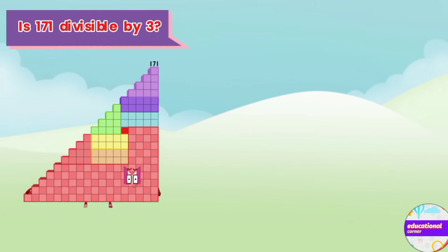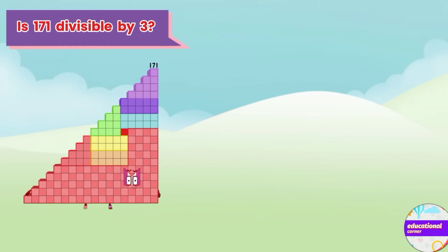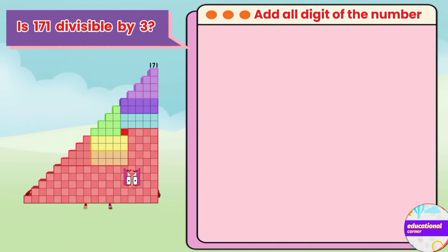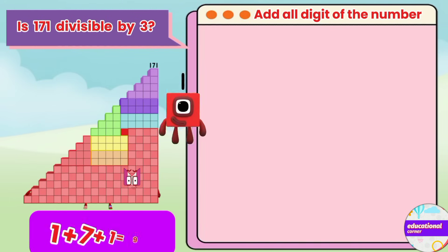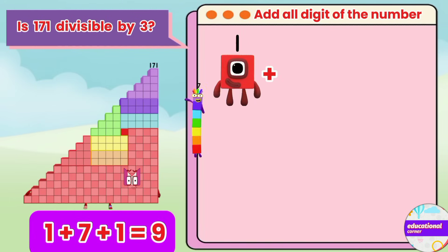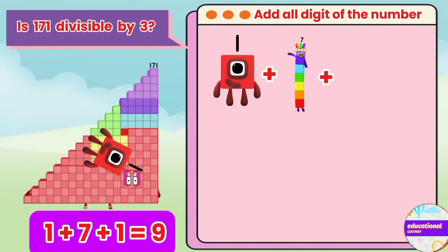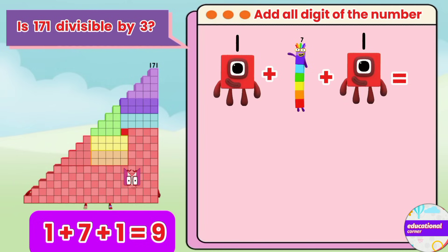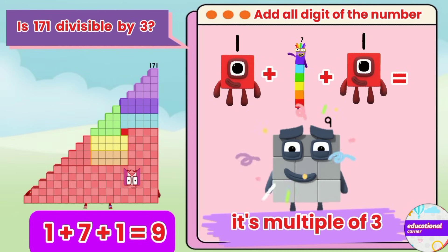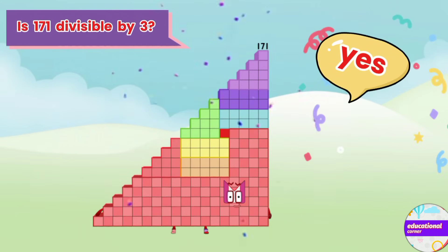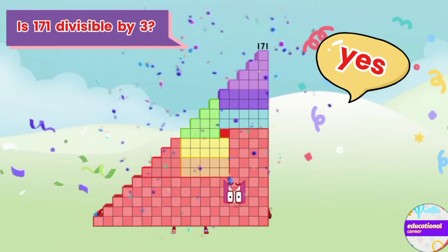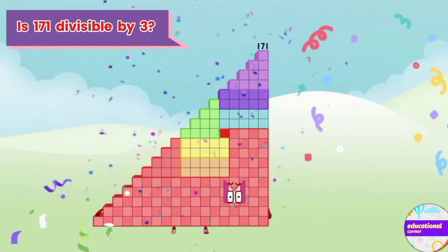Is 171 divisible by 3? Let's check. 1 plus 7 plus 1 equals 9. It's a multiple of 3. Yes! So, 171 is divisible by 3.